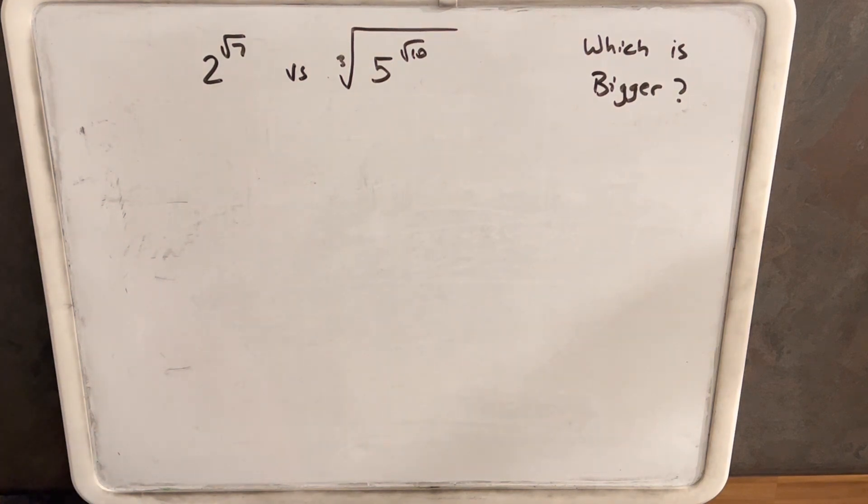Which is bigger, 2 to the square root of 7 or the cube root of 5 to the square root of 10? Wow, so we have a lot of radicals that we need to deal with.